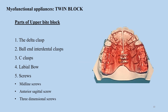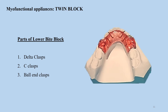The upper and lower bite blocks have different components. The upper bite block has a delta clasp, ball and interdental clasps, a C-clasp, a labial bow, a midline screw, an anterior sagittal screw, and optionally a three-dimensional screw. The image shown is a conventional twin block designed by Clark, and you can see one or more of these components in this block.